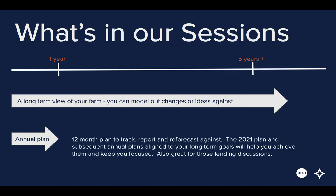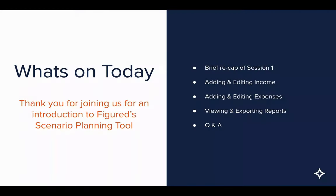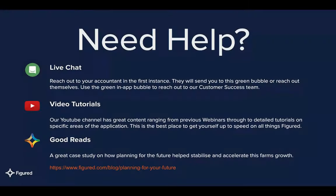You get a 12-month plan to track, report, and forecast against — and subsequent annual plans aligned to your long-term goals will help you achieve them and keep you focused. These are also great for lending discussions when you're at the bank or with your accountant. Today we'll do a brief recap of session one, then jump into adding and editing income, then adding and editing expenses, and we'll finish off with viewing and exporting reports followed by Q&A.